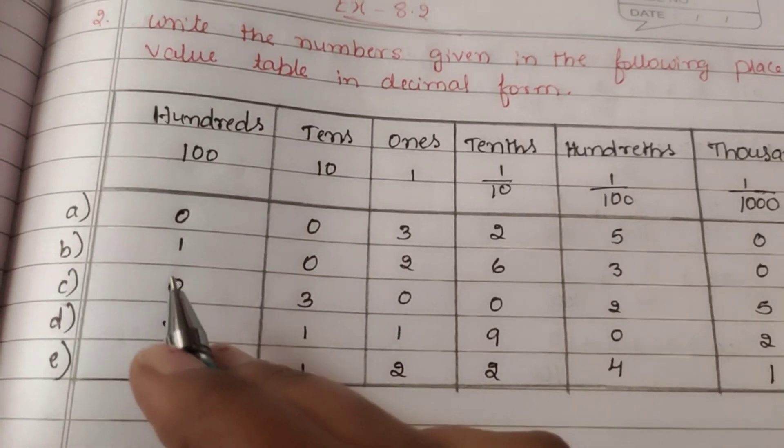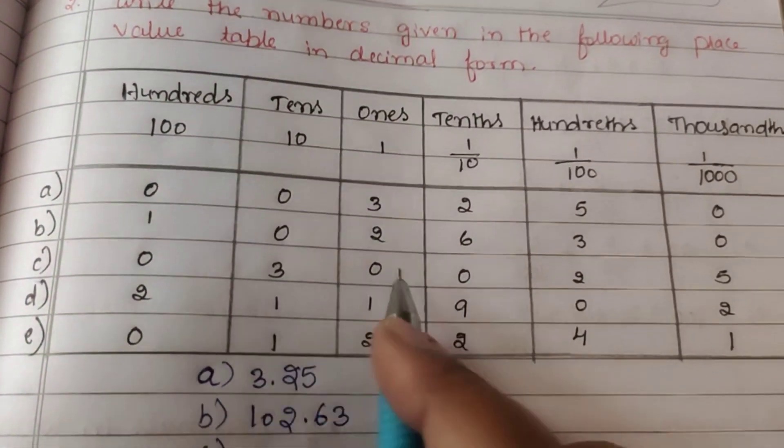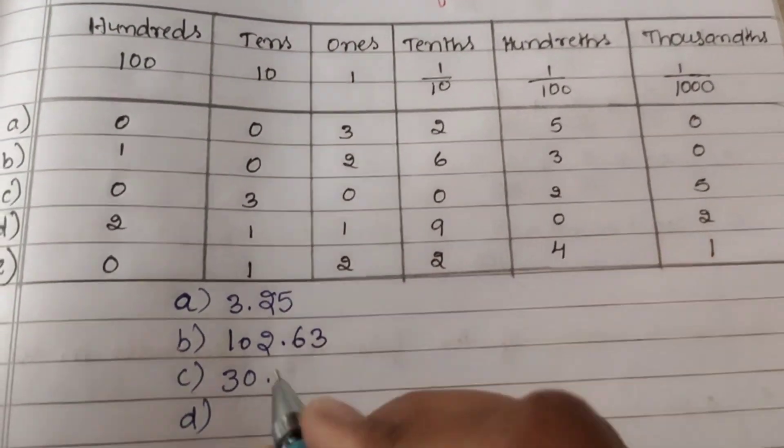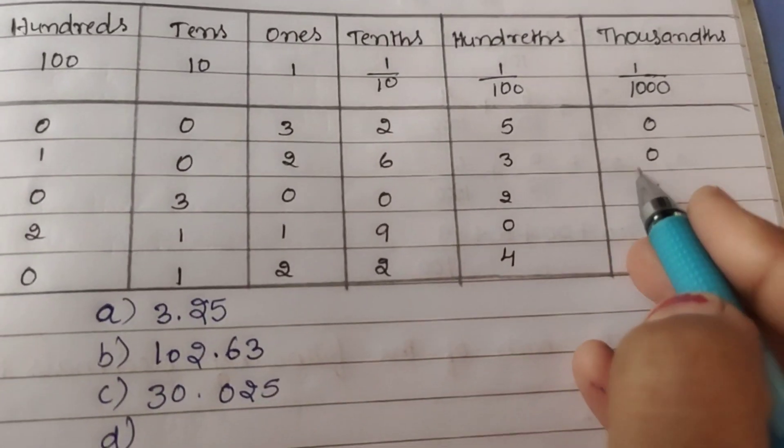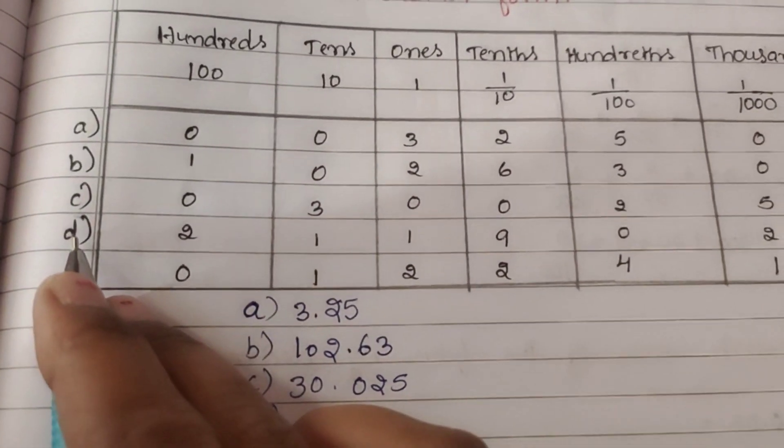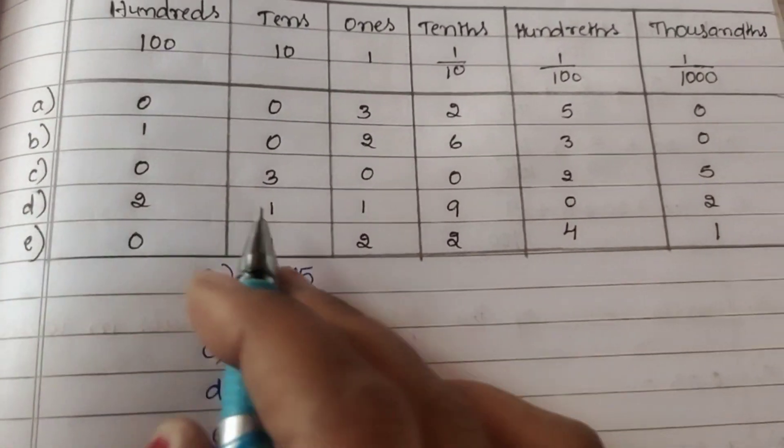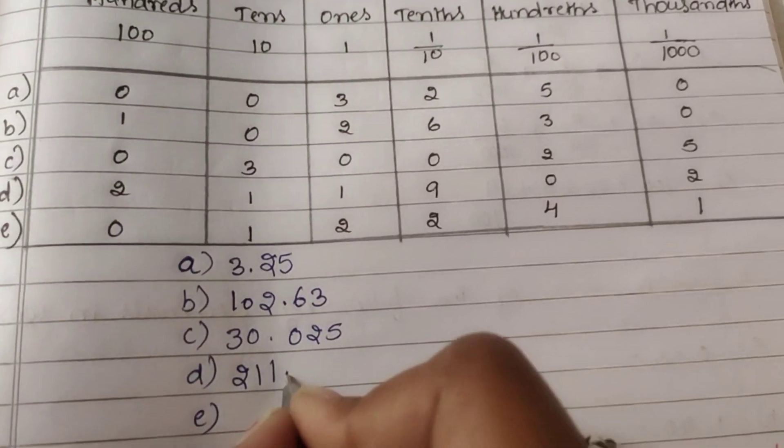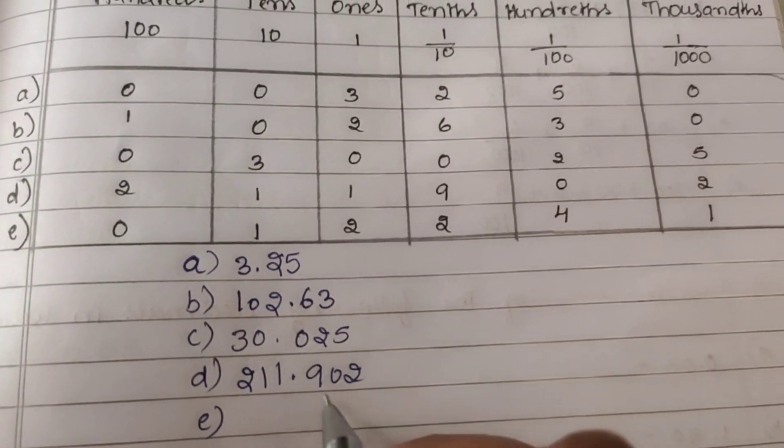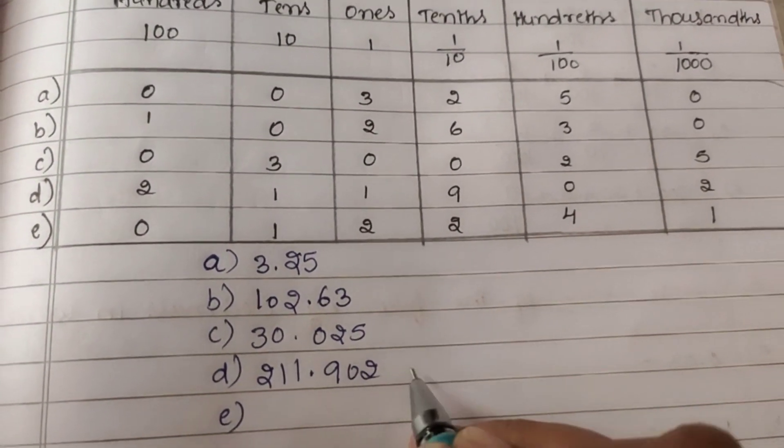Next question: 0, 3, 0, 0, 2, 5. Hence reading the places: 10s are 1, giving 211.902. The point separates the numbers after the decimal.